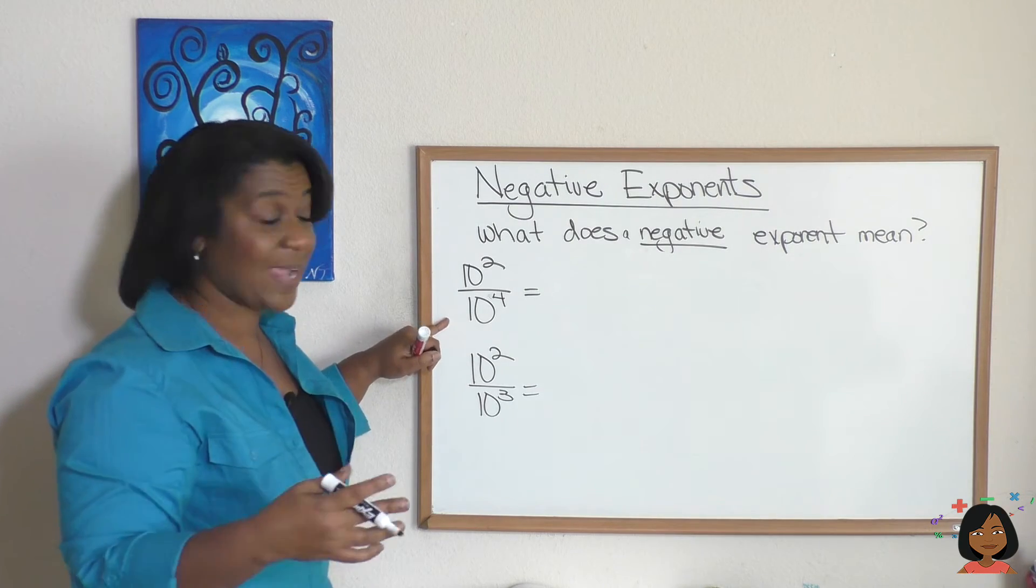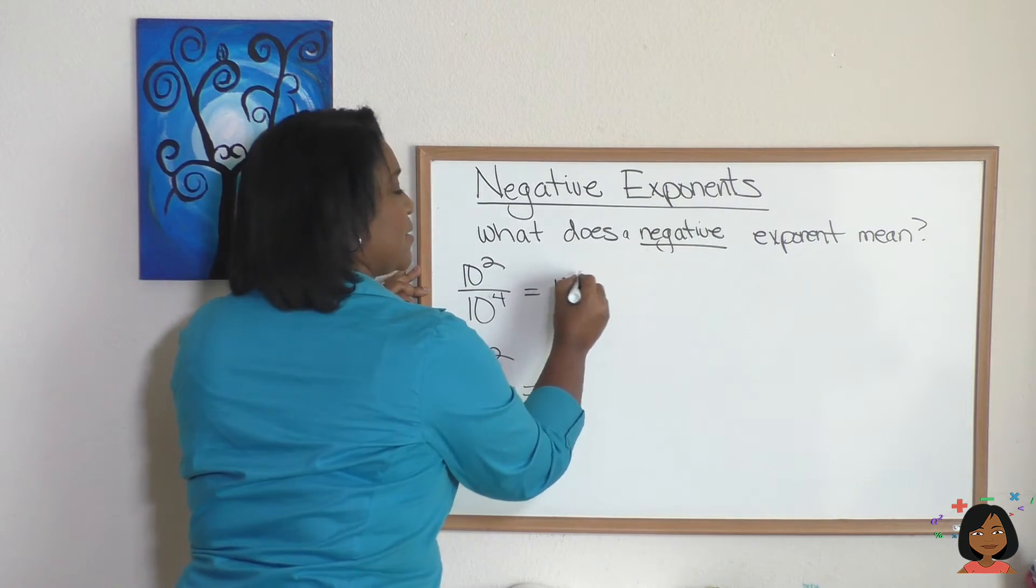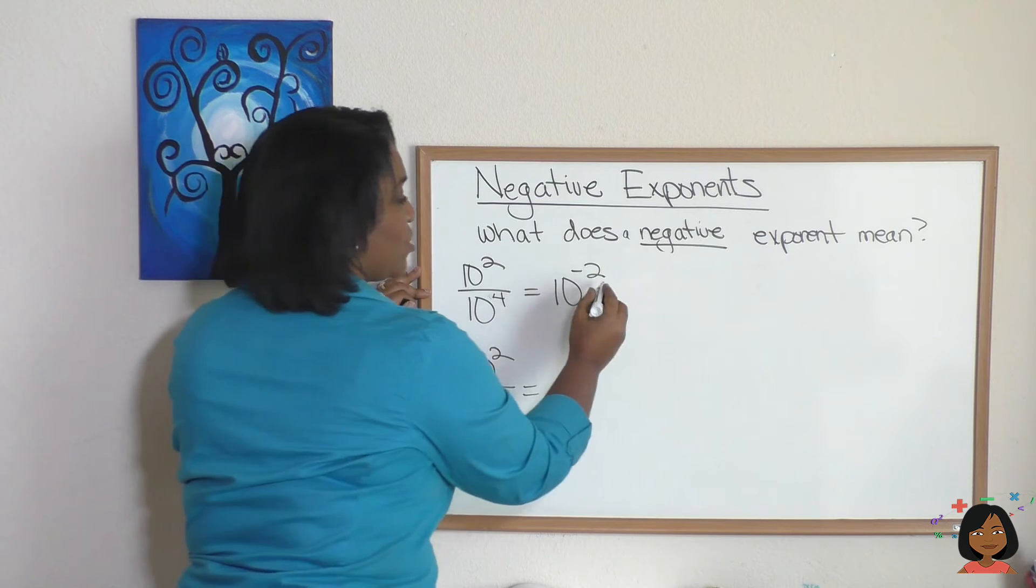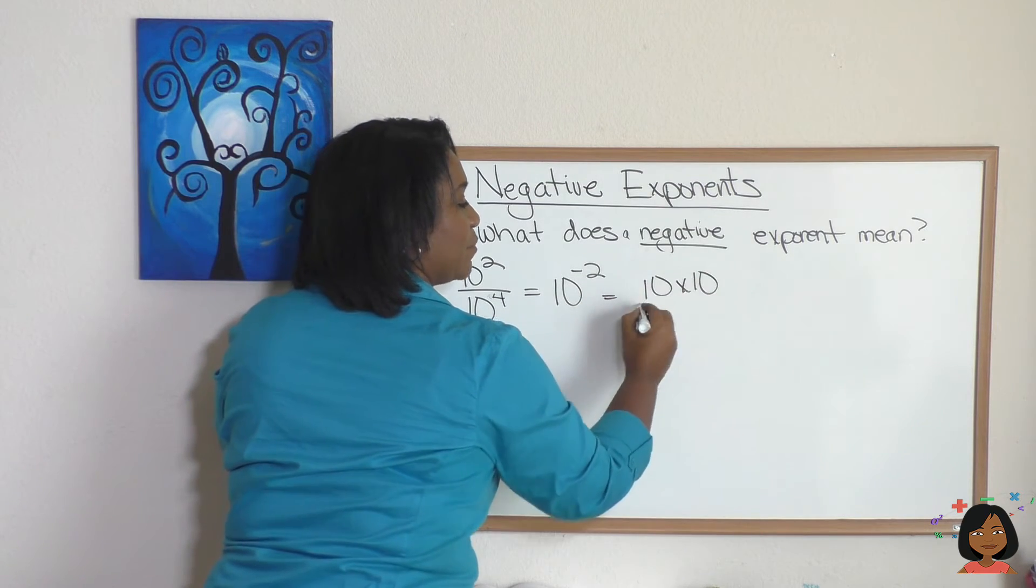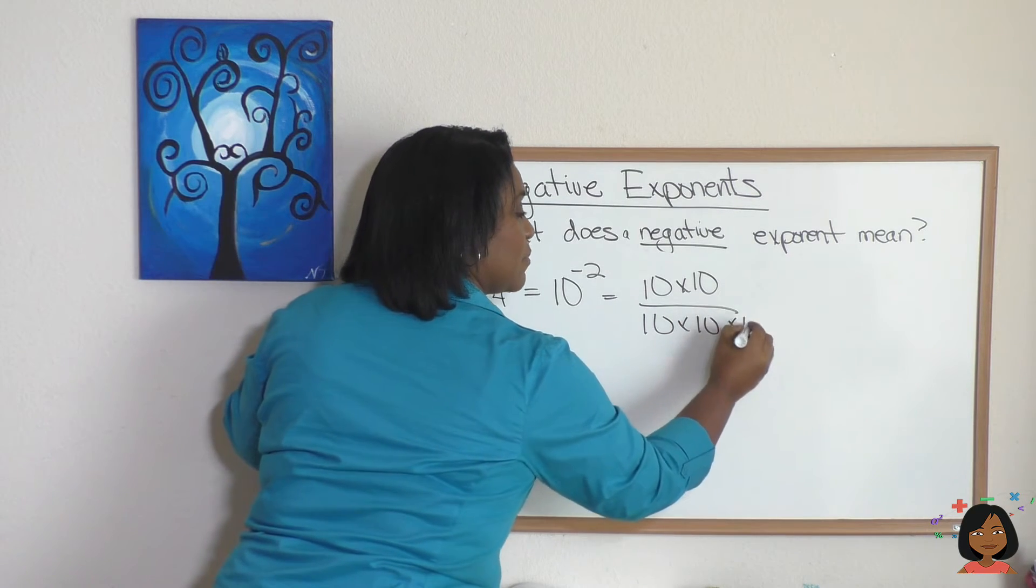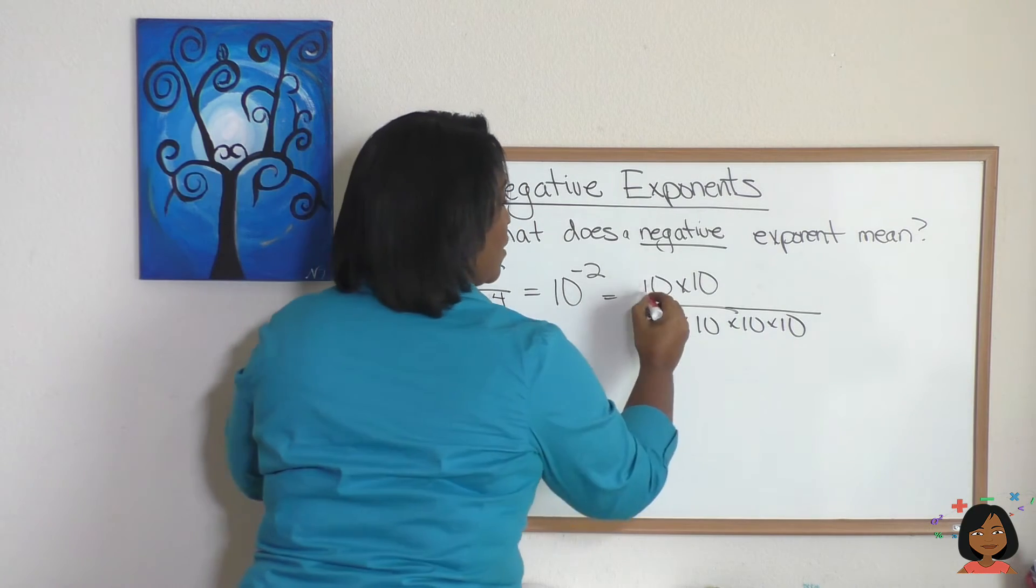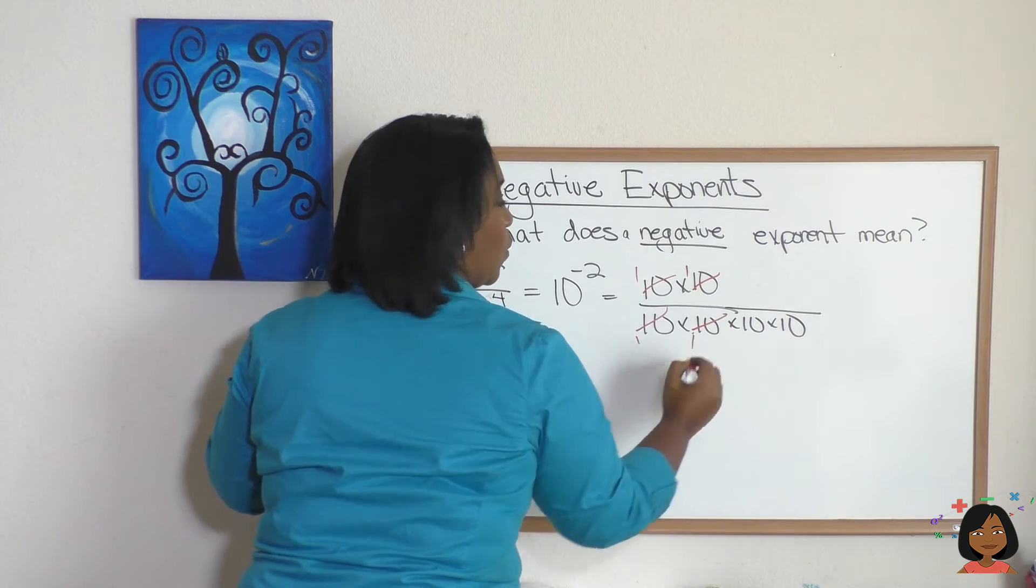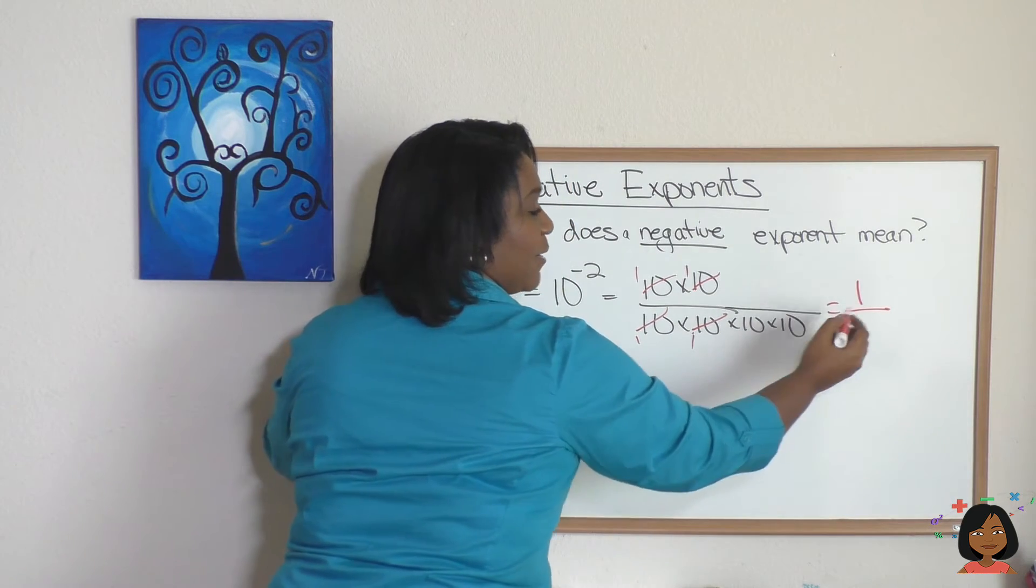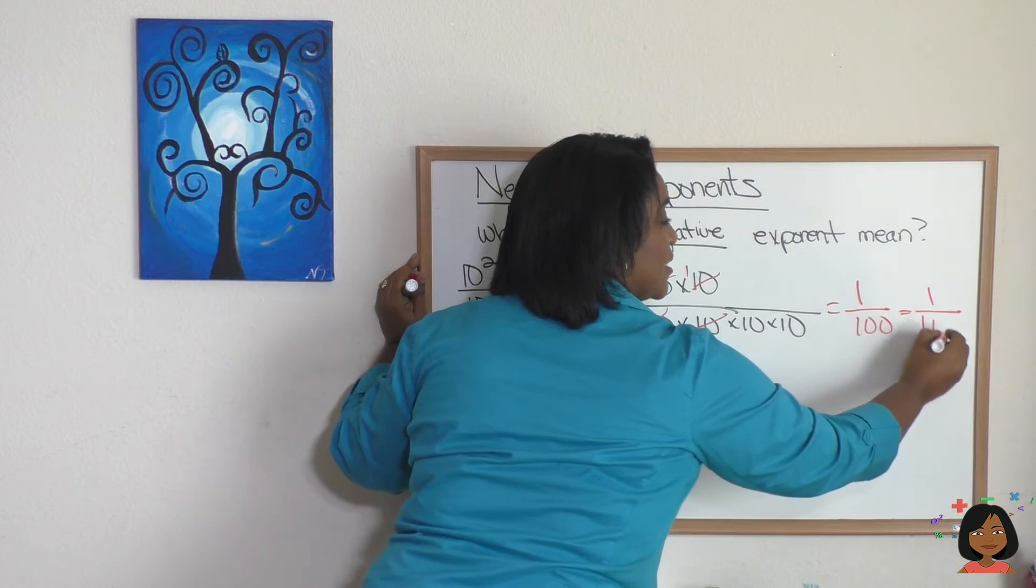Well, let's use the trick. We subtract the exponents. 2 minus 4 is going to be 10 to the negative 2, right? 2 minus 4 is negative 2. What does this actually mean? 10 squared we know means 10 times 10. 10 to the 4th means 10 times 10 times 10 times 10. Let's simplify. And we're left with 1 over 10 times 10, which is 100, which is also the same thing as saying 1 over 10 squared.